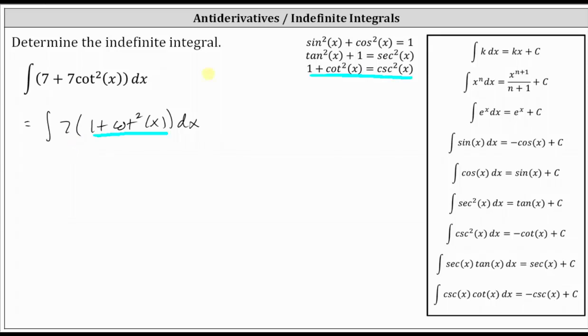And therefore, the given integral is equal to the integral, or more specifically, the indefinite integral of seven cosecant squared x dx. And notice how here there is a formula for the integral of cosecant squared x dx, which is negative cotangent x plus c.